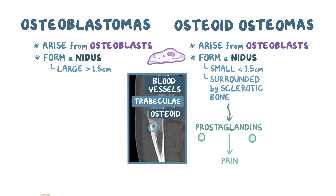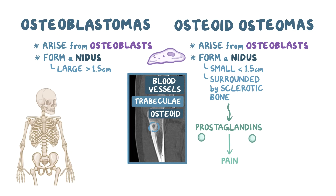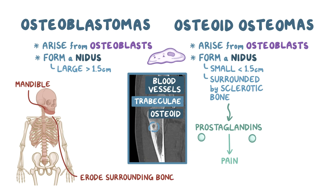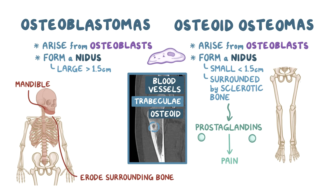Osteoblastomas tend to affect the bones of the axial skeleton, usually the mandible, and erode the surrounding bone. In comparison, osteoid osteomas typically affect the diaphysis of long bones like the tibia and don't usually erode the surrounding bone.